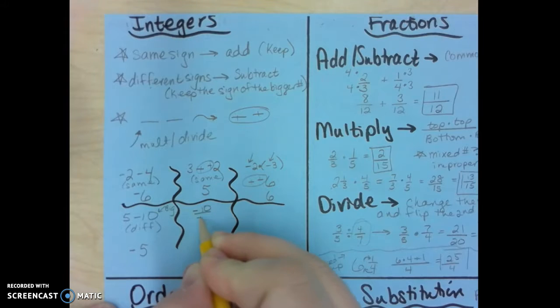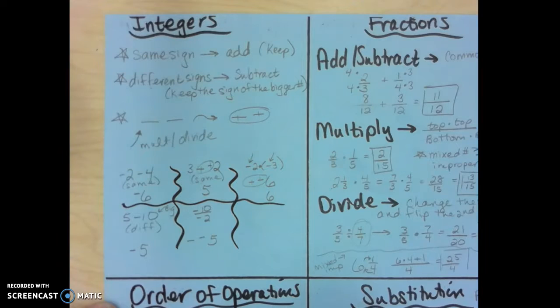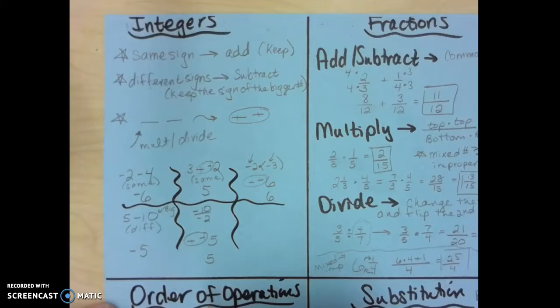Negative 10 divided by negative 2. Again, I just do my math. 10 divided by 2 is 5. And I write down the two signs, because there was two negatives, so I write them down. I circle those, and so my answer is positive 5.